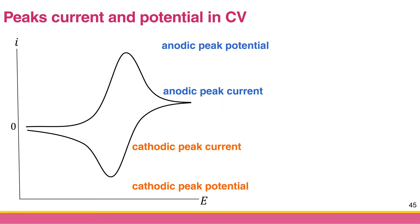The cyclic voltammogram has two peaks, so we can analyze both peaks in terms of potential and current. The first peak is the anodic peak. The height of this peak is called the anodic peak current or IPA, and the position of this peak is called the anodic peak potential or EPA.